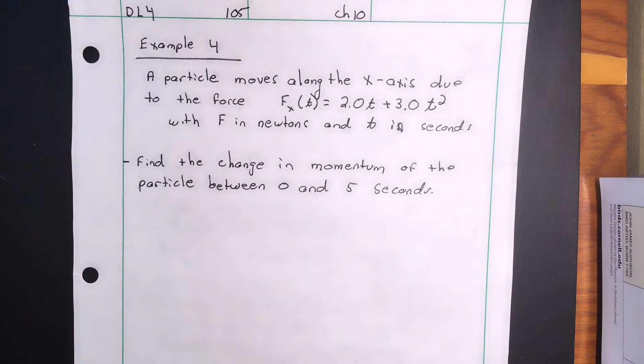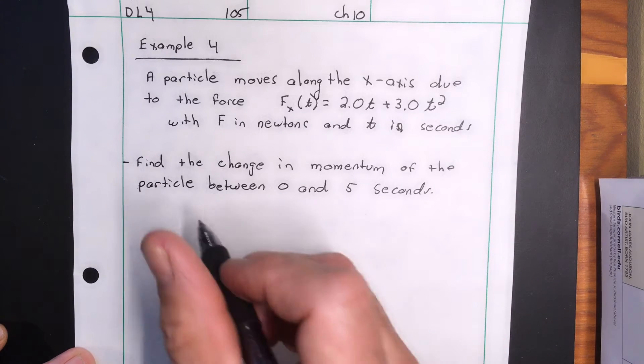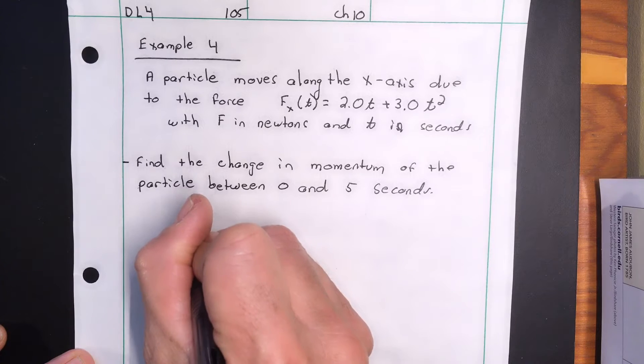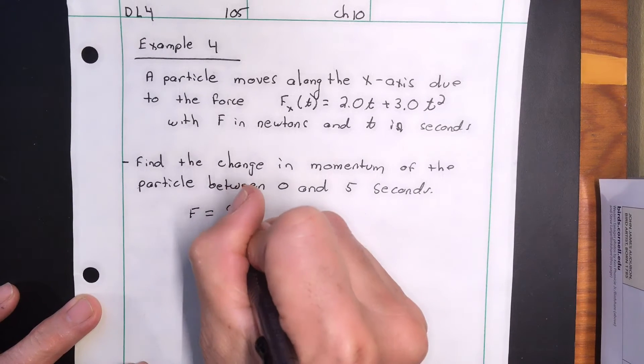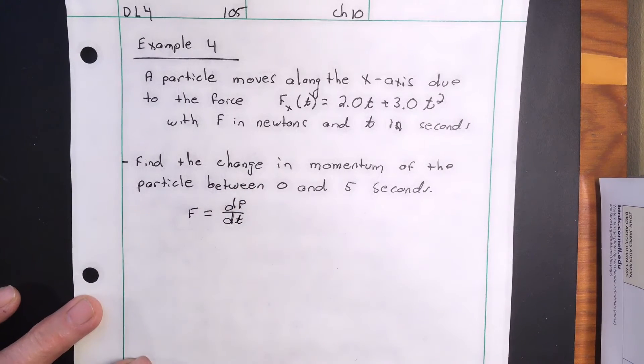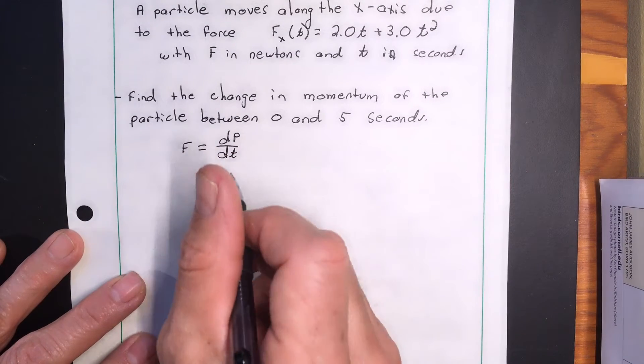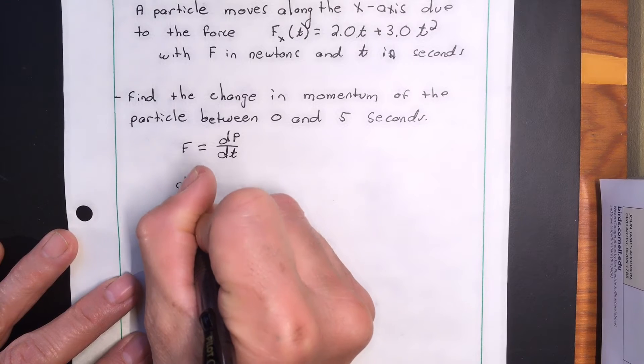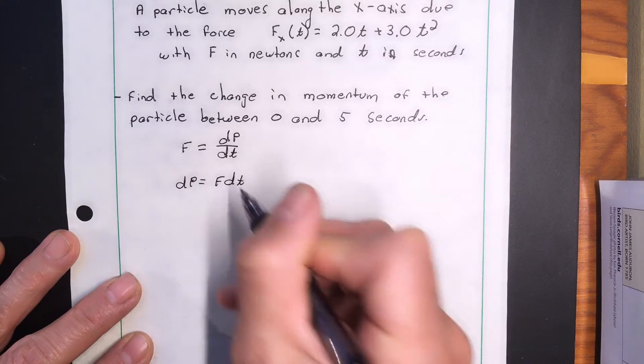Now this is a single particle and we're told it's being acted on. Remember external force is the change in momentum with time. So the change in momentum is just force times dt.